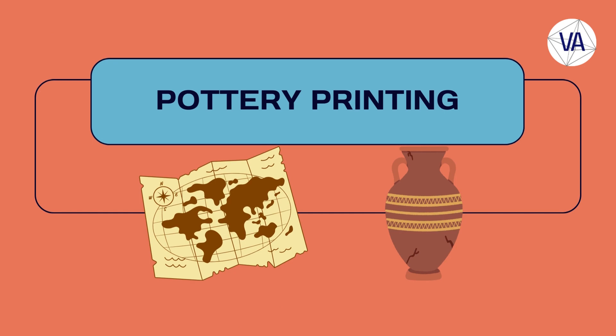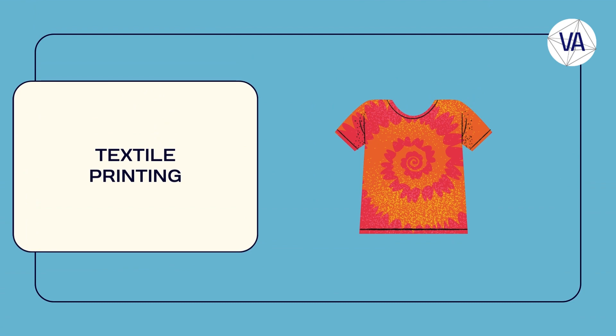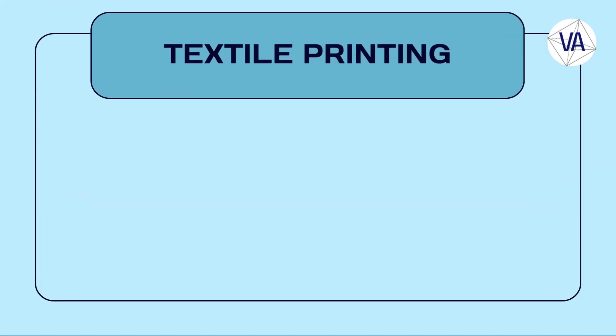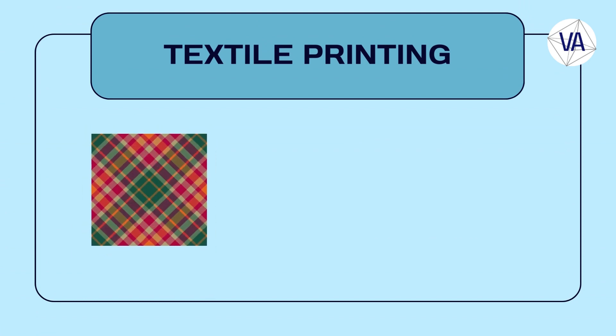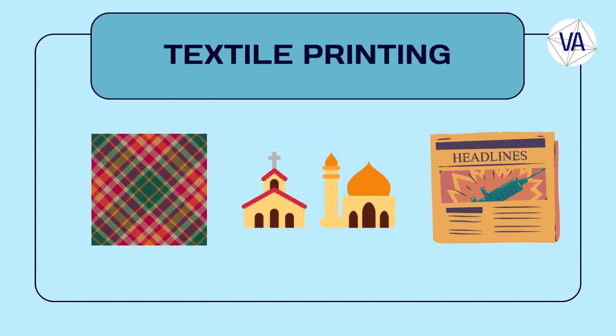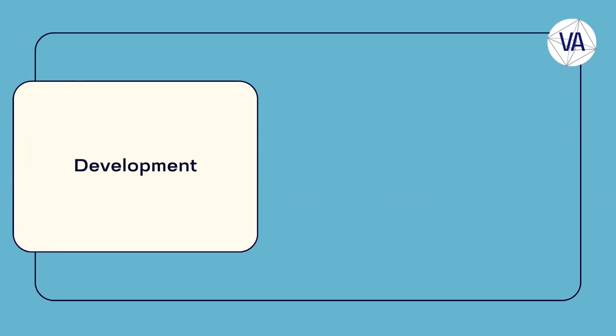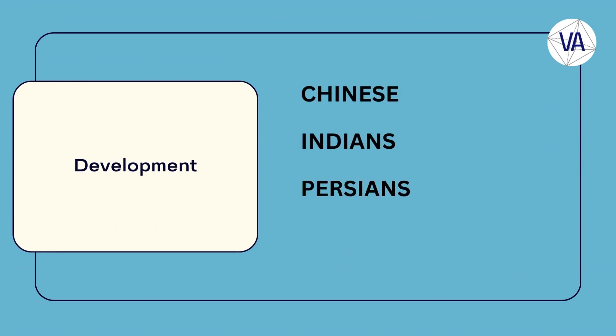One of the most ancient and widespread forms of printing was textile printing, which involved applying dyes or pigments to fabrics such as silk, cotton, or wool. Textile printing was used to create decorative patterns, religious symbols, and political messages on clothing, banners, and flags. Textile printing was developed independently by different civilizations, such as the Chinese, the Indians, the Persians, and the Europeans.